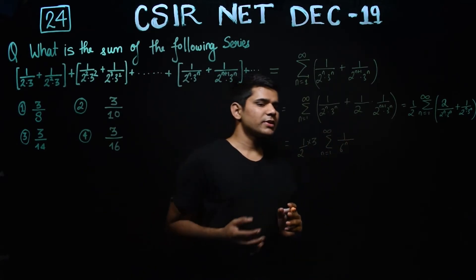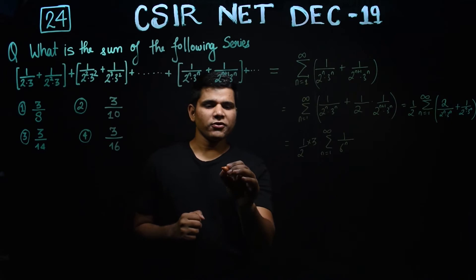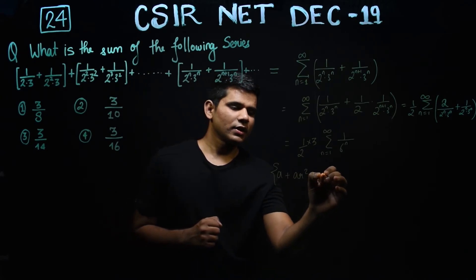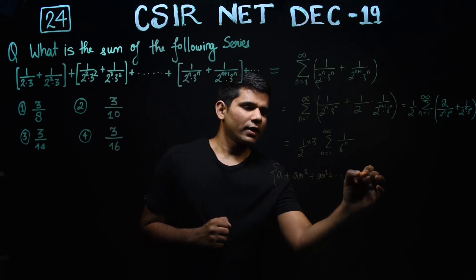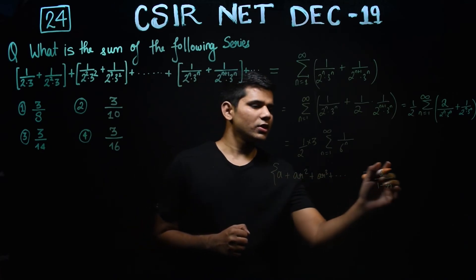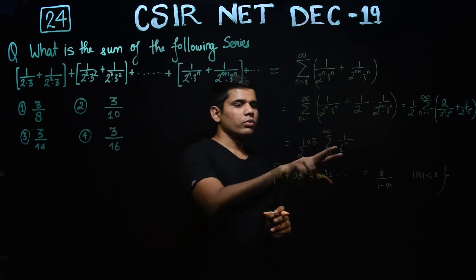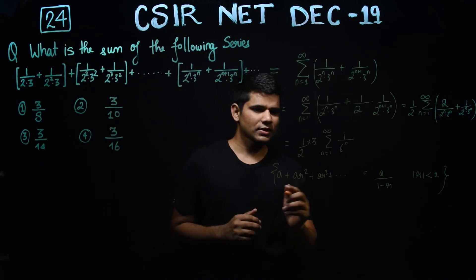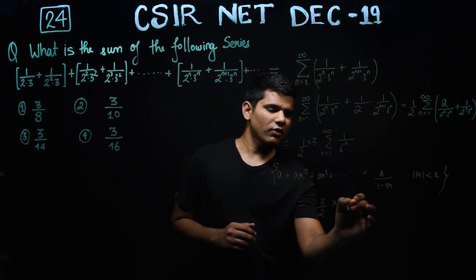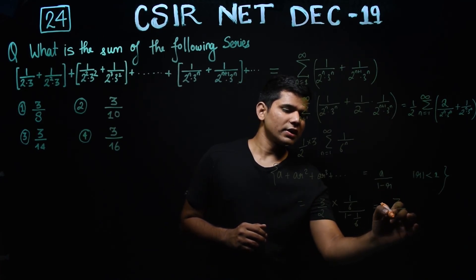This is a very famous series known as the geometric series, and you already know its sum. For a geometric series of the form a plus ar plus ar squared and so on, the sum is a over (1 minus r), but this is only possible when the ratio r is less than 1. In this case your ratio is 1 over 6, which is less than 1, so you can use this formula. You get (1/6) divided by (1 minus 1/6), and finally you are getting 3 over 10.